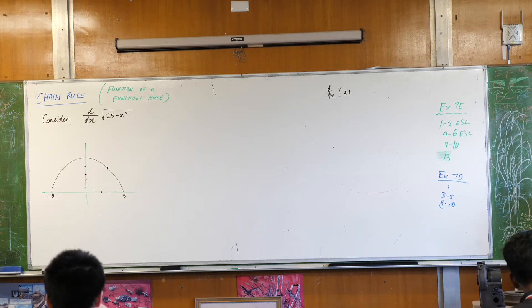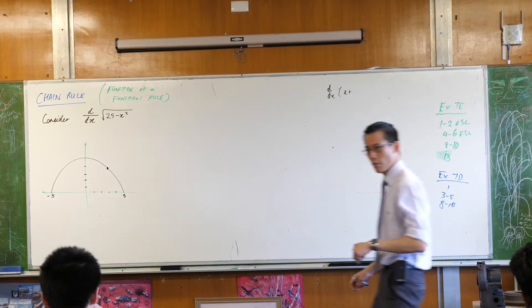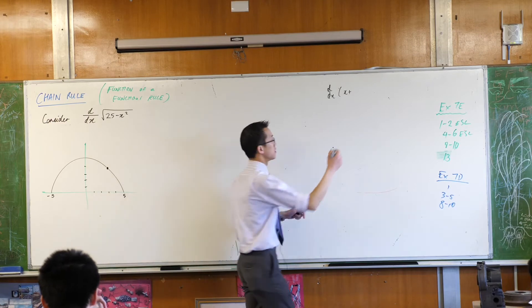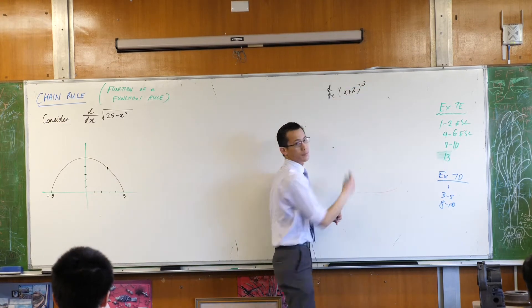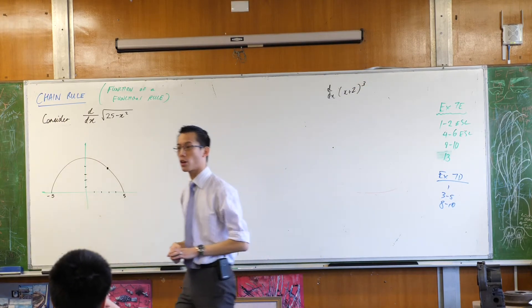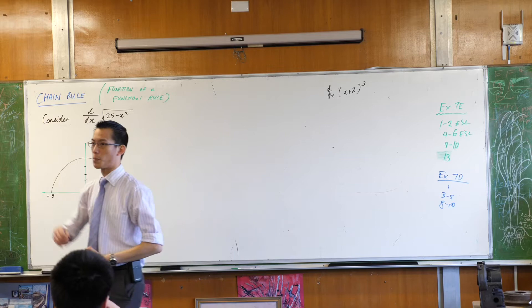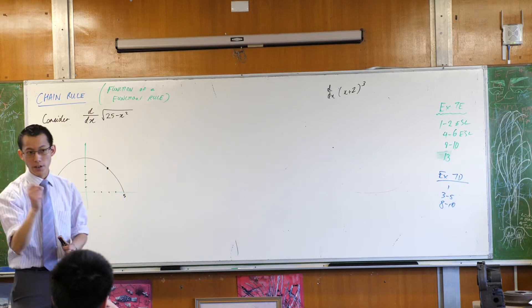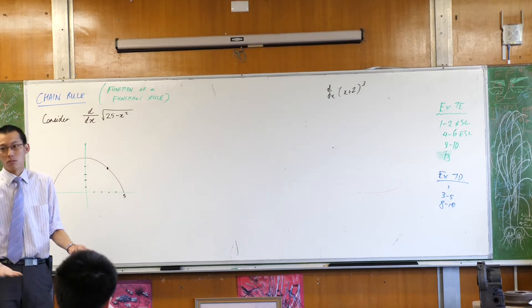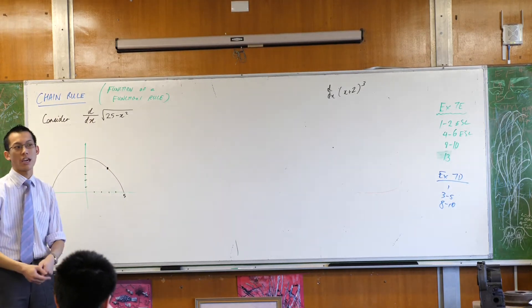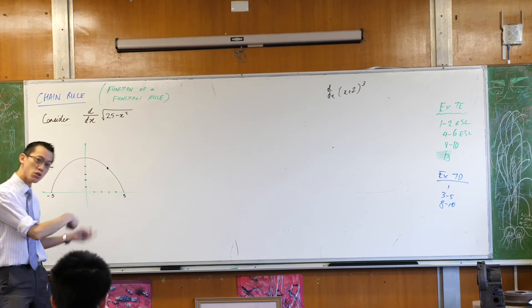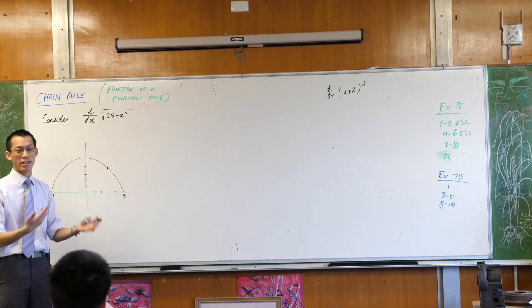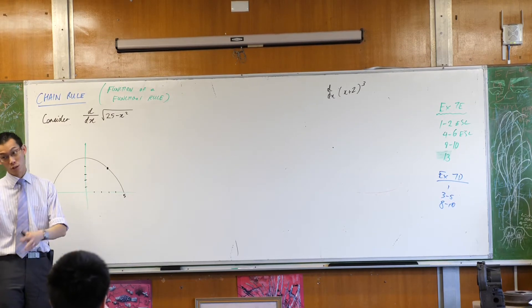The example we started with first thing in this lesson was the derivative of x cubed. The reason I chose that one was because you can do it without the chain rule, which is nice because then you can verify that when you do use the chain rule you get the right answer — which is what we did.